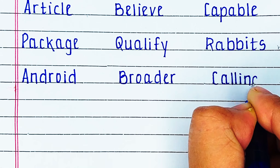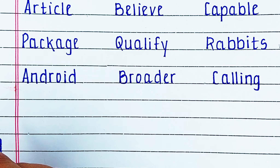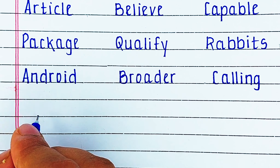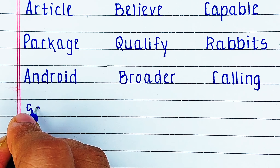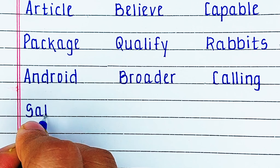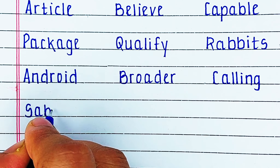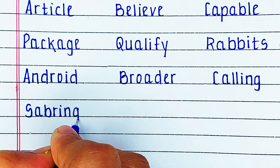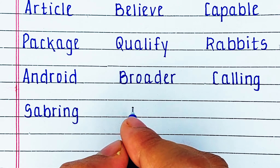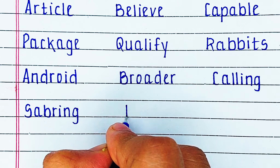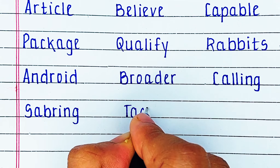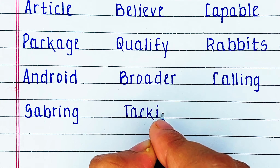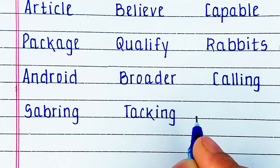Next is Alphabet S. The word is S A B R I N G, sabring. Next is Alphabet T. The word is T A C K I N G, tagging.